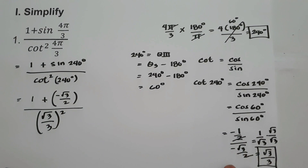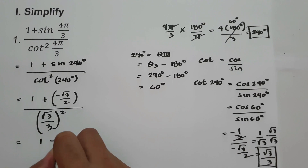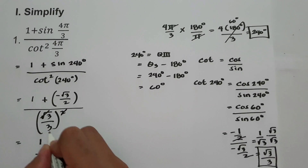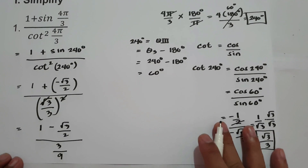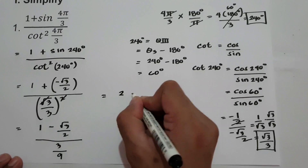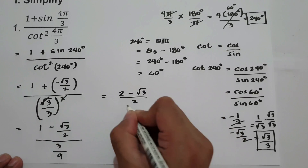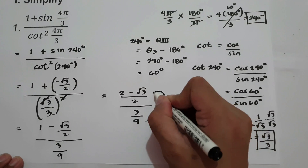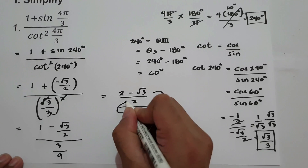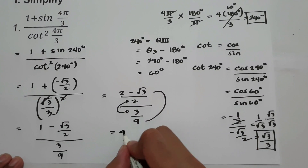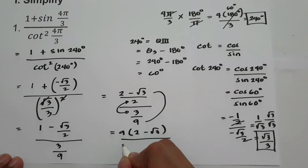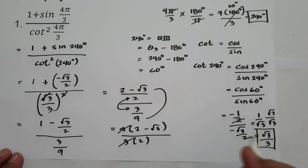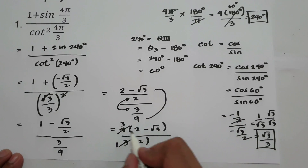We have a square, so let us simplify. We have 1 minus square root of 3 over 2, all over — canceling — we have 3, and 3 squared is 9. So we get 2 times 1, that is 2, minus square root of 3 over 2, divided by 3 over 9. Multiplying 9 and (2 minus square root of 3), then 2 times 3, we have 9 times (2 minus square root of 3) over 3 times 2. We can cancel 9 and 3 since they are divisible by 3: 3 becomes 1 and 9 becomes 3, and 3 times 2 is 6.